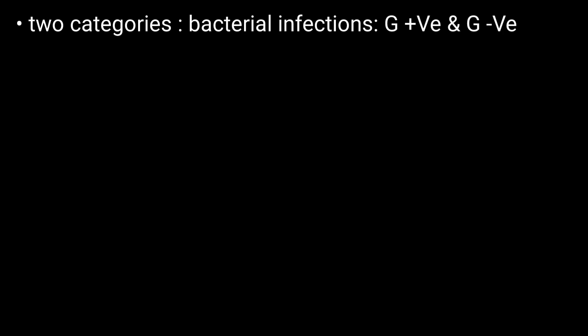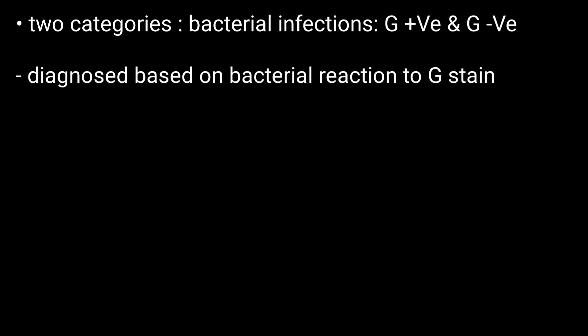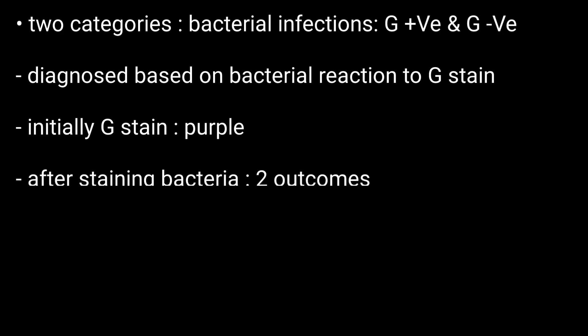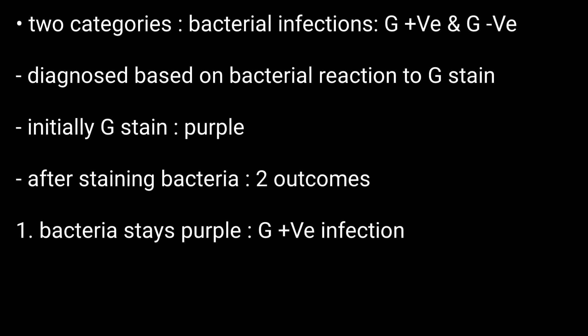Results and interpretation: there are two main categories of bacterial infections — gram positive and gram negative. These categories are diagnosed based on how the bacteria reacts to the gram stain. Initially, a gram stain is colored purple, and after staining, two outcomes are possible.